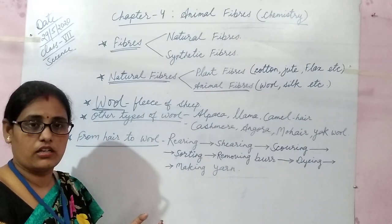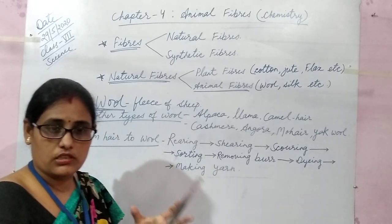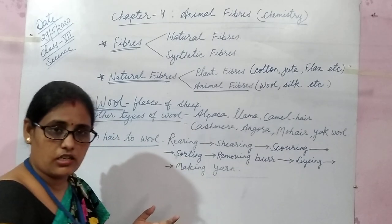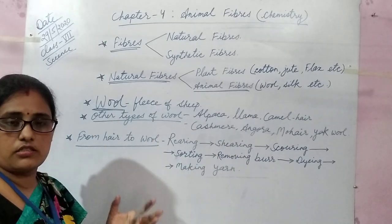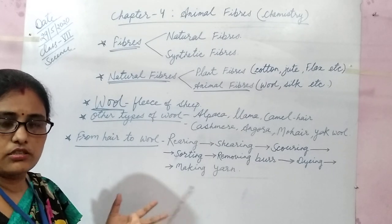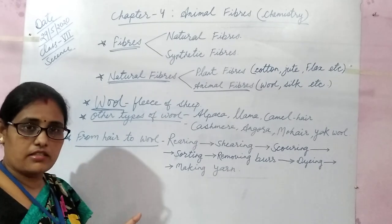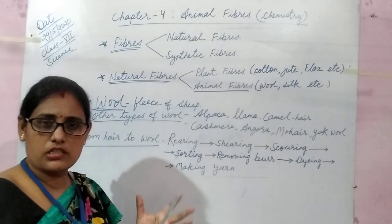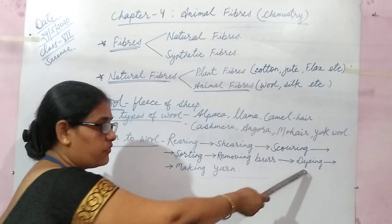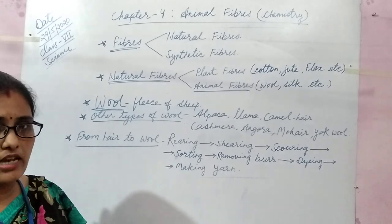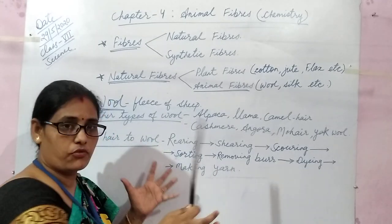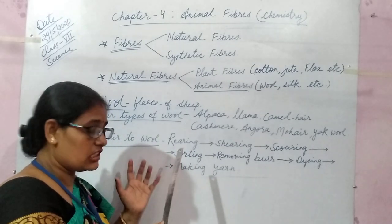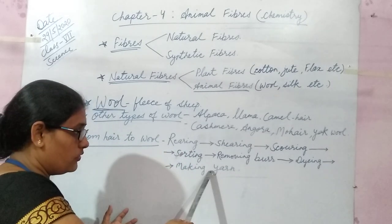The third step is scouring, in which the sheared wool is washed with soap and water to clean it so that all the dirt, germs, etc. are removed. The fourth step is sorting, in which the scoured wool is grouped into different categories — separating the fibers into different textures. After sorting, burrs are removed manually. Then the wool is dyed into different colors, since the natural color of wool is white, black, or brown.